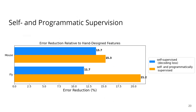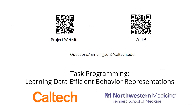We also compute the average error reduction over all training fractions relative to state-of-the-art features. We see that self-supervised losses result in effective representations that can reduce classifier error. However, compared to using self-supervision alone, the representation from TREVA leads to a greater error reduction. We have released our code, and we hope that task programming can be helpful for your behavior analysis experiments.